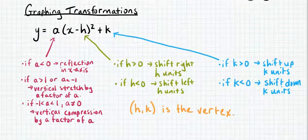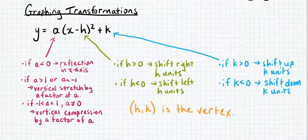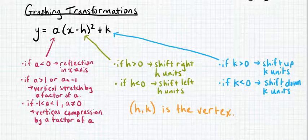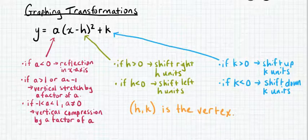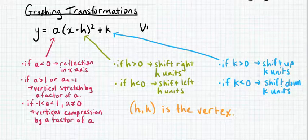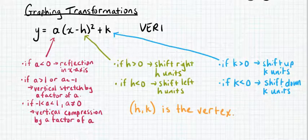This video is going to take you through how to graph a quadratic relation using transformations. This form of the equation, y equals a times x minus h all squared plus k, is known as vertex form of a quadratic relation.